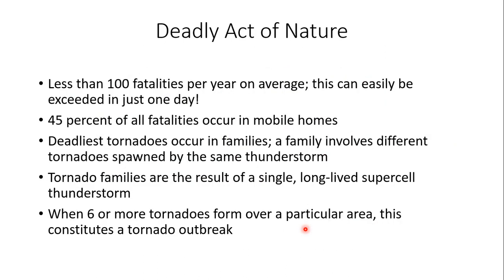How deadly are tornadoes overall? Usually fewer than 100 fatalities per year on average, but this can easily be exceeded in just one day during major outbreaks. About 45% of all fatalities generally occur in mobile homes. The deadliest tornadoes occur in families — different tornadoes spawned by the same thunderstorm. Tornado families result from a single long-lived supercell thunderstorm. Please feel free to go back and watch the supercell thunderstorm training video for more detail.